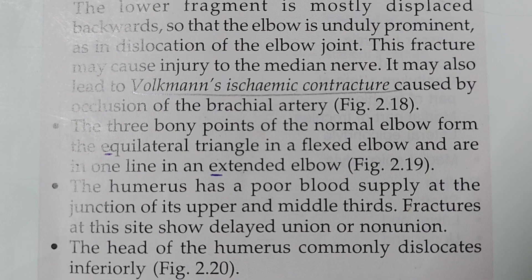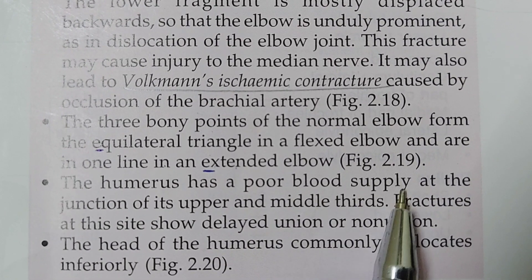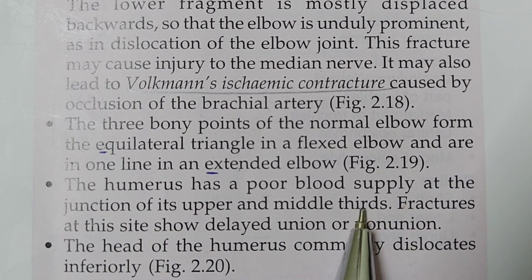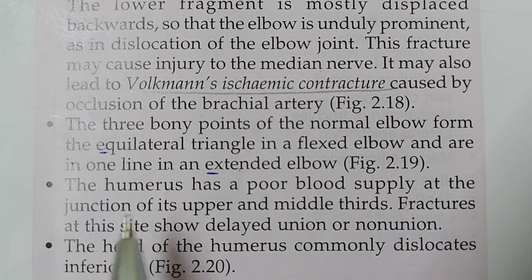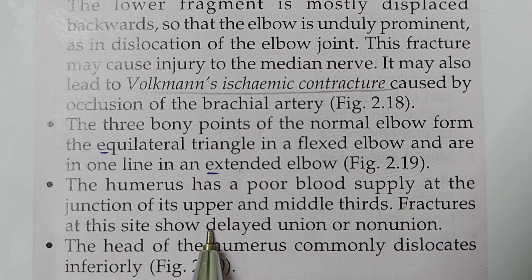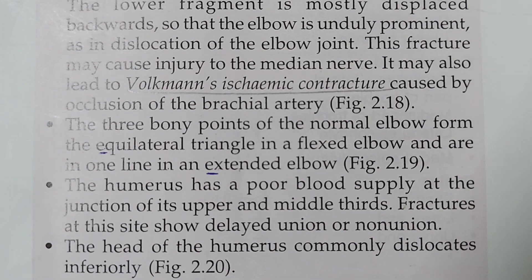The humerus has a poor blood supply at the junction of its upper and middle thirds. A fracture at this site shows delayed union or non-union.